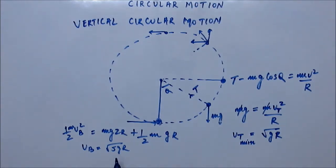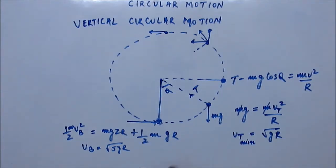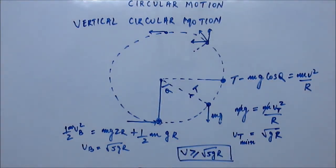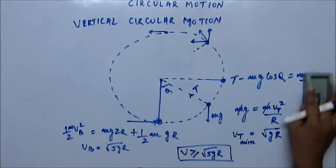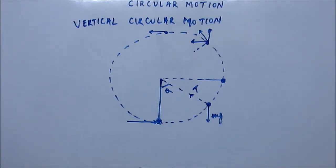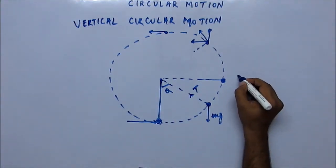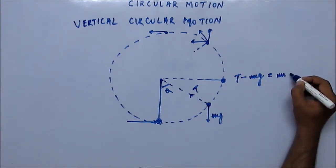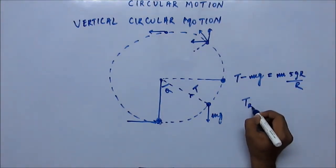Vb is the minimum velocity at the bottom which will ensure that the mass goes completely in the circular path — that is √(5gR). So the minimum velocity at the bottom is √(5gR), meaning the velocity with which the motion starts from the bottom should be greater than or equal to √(5gR). Now the tension at the bottom: T minus mg equals the centripetal force mv²/R, so v²/R = 5gR/R.